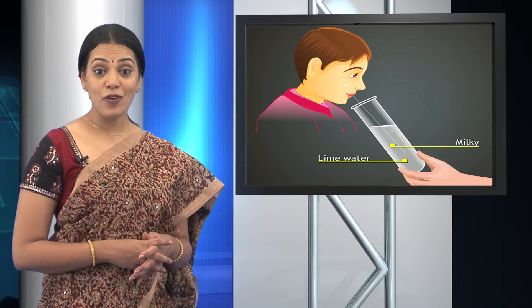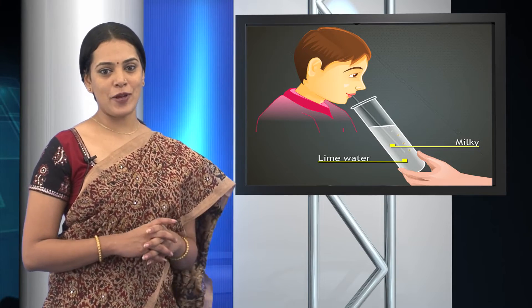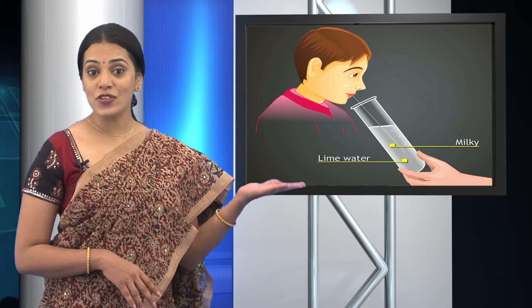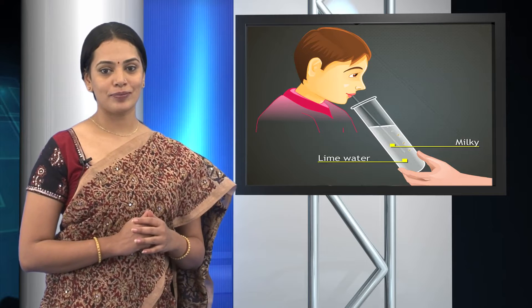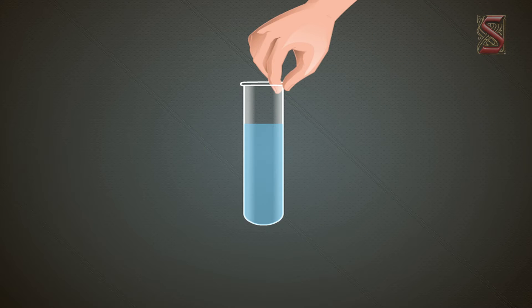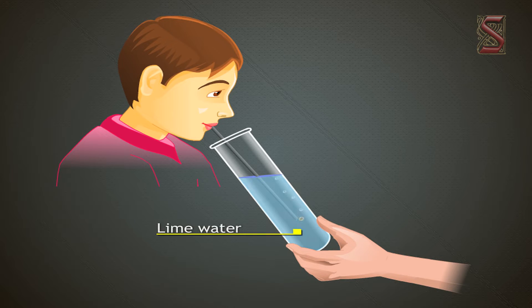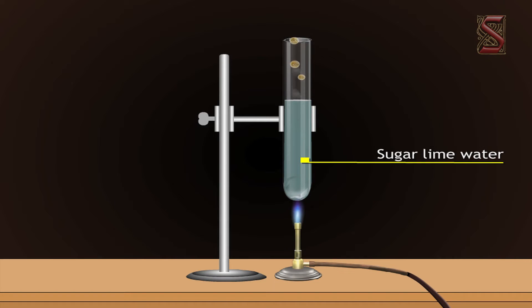Children, people conduct a simple experiment to show that carbon dioxide is released during breathing. If you exhale into a test tube that contains lime water, you will notice that it turns milky, proving that carbon dioxide is given out during respiration. You will get the same results if you burn glucose in a test tube.